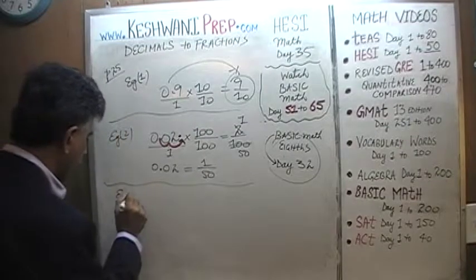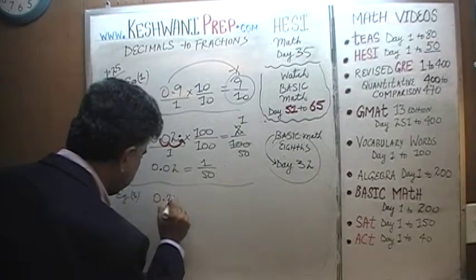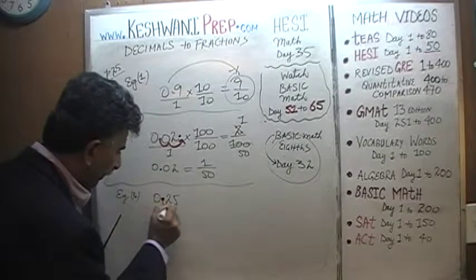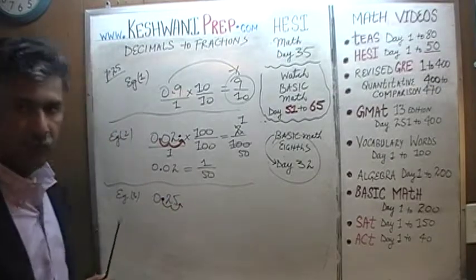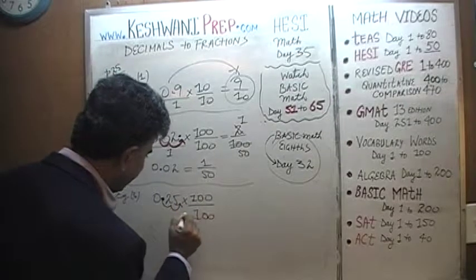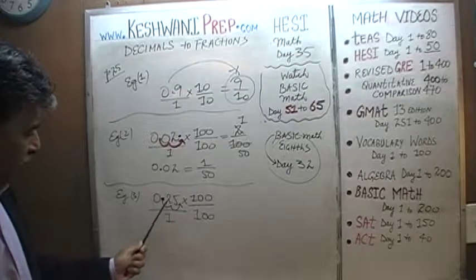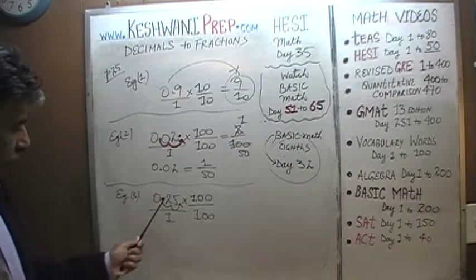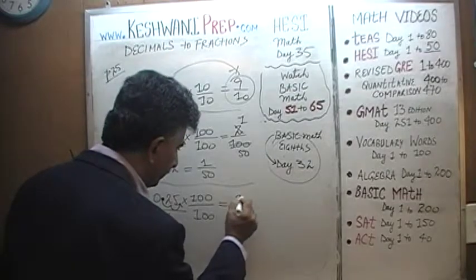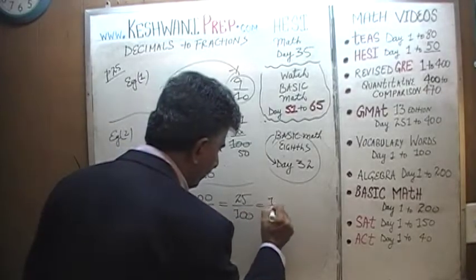Number three: 0.25 — a simple, straightforward one. Again, we have two decimal places, one and two. We need to move the decimal two spots, so we need to multiply by a hundred. Multiply top and bottom by a hundred: 0.25 over one, multiplied by a hundred, gives us twenty-five over a hundred.